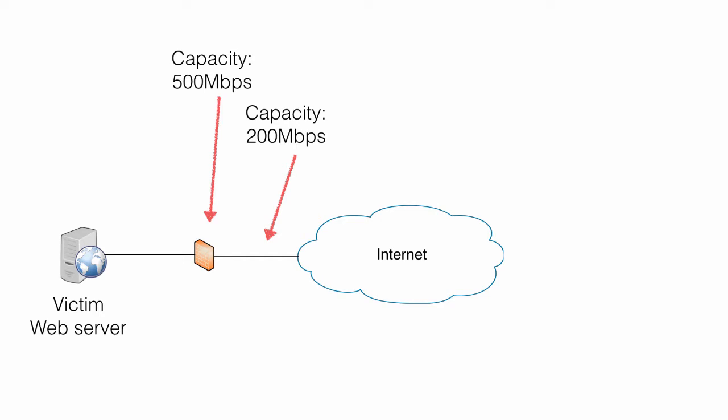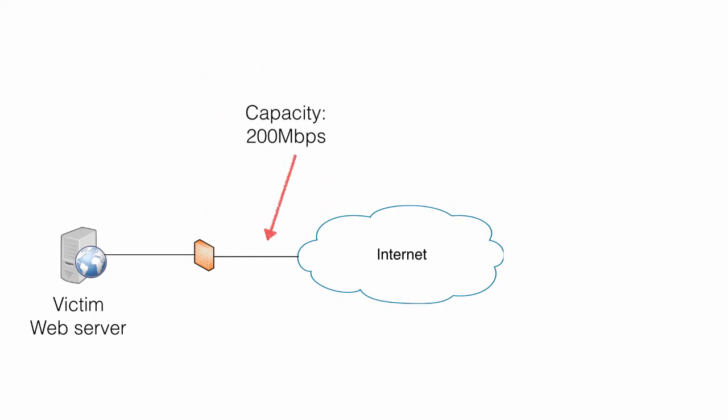If the link or the firewall is exhausted, it will start dropping packets. The result of this is transmission failures and eventually outage of services — the web page will become slow or unresponsive. So if the weakest link is 200 megabits per second, all it takes to do a denial of service attack is to generate more than 200 megabits per second of traffic.